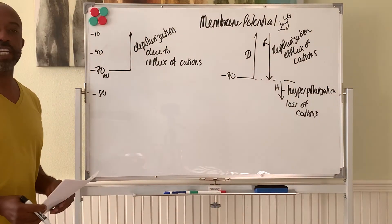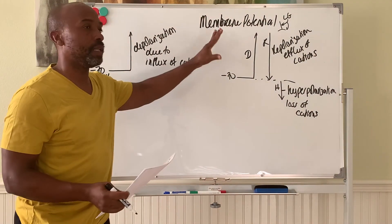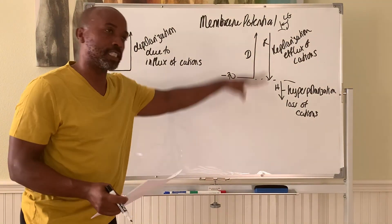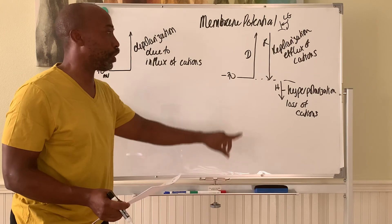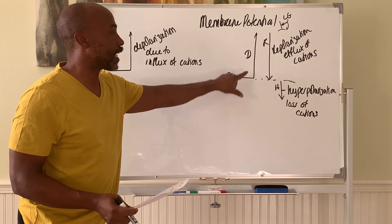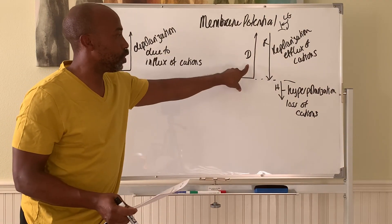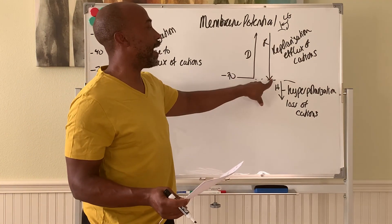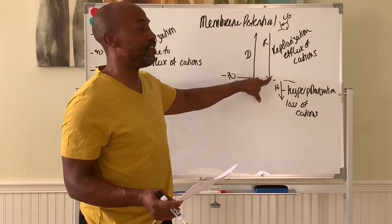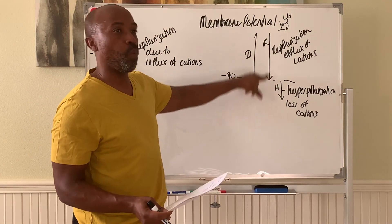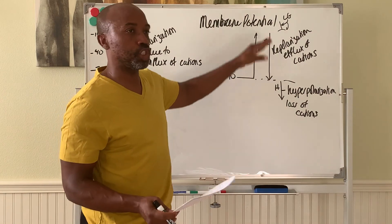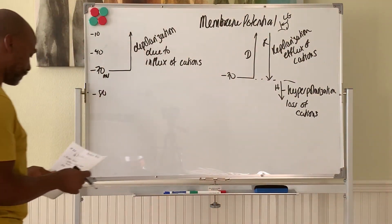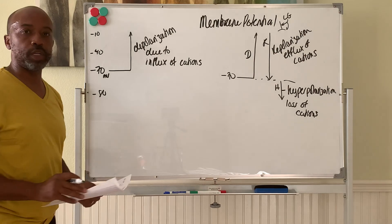Those are the possible changes in the membrane potential that can occur when ions cross the cell membrane. When positive ions enter, you depolarize. When positive ions leave, you repolarize and even hyperpolarize, in response to cations leaving the cell.